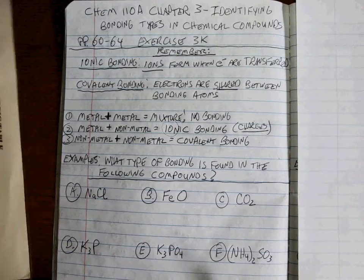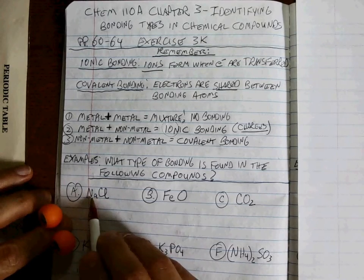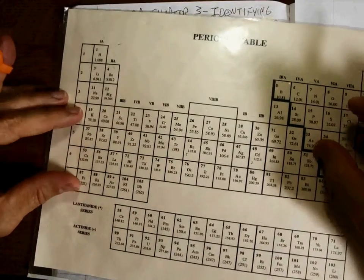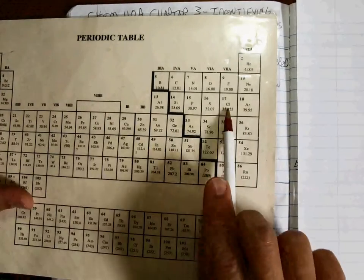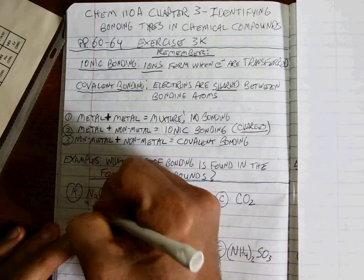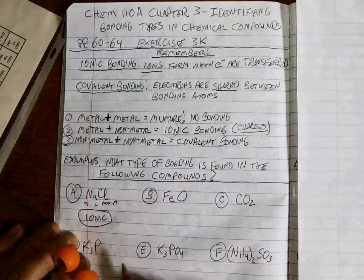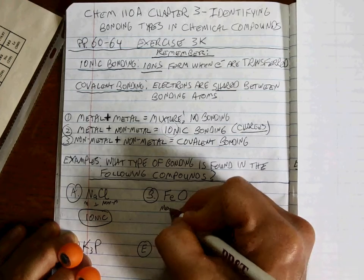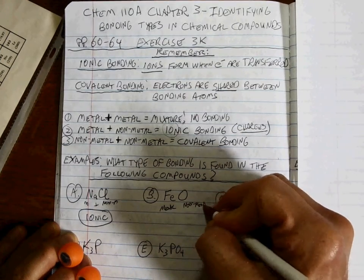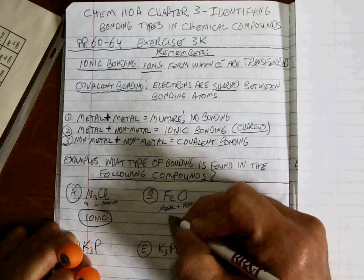After hitting pause, let's take a look. Sodium is a metal, chlorine is a non-metal — metal plus non-metal makes ionic bonding. Fe is iron, that's a metal; oxygen is a non-metal. Iron is a transition metal, but it's still a metal — metal plus non-metal makes ionic bonding.